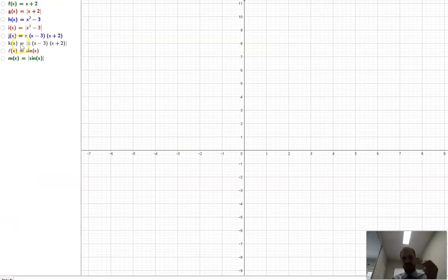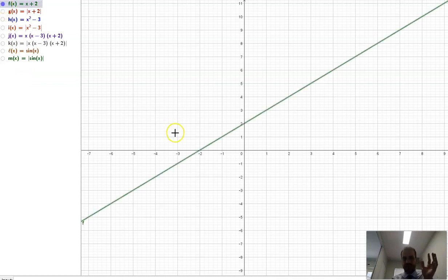All right, here we are. I've got a list of eight functions, same as on my OneNote. Let's have a look at the linear function x plus 2. It's got a gradient of 1. It passes through the y-intercept there at x plus 2.